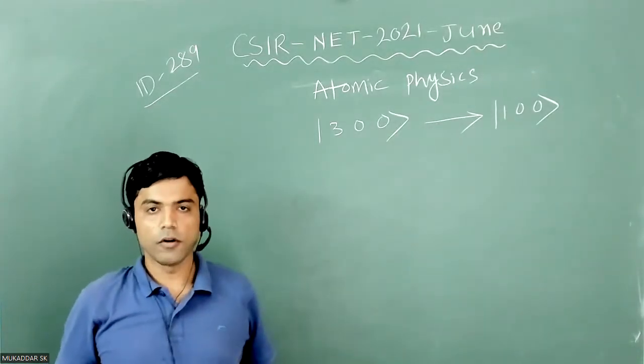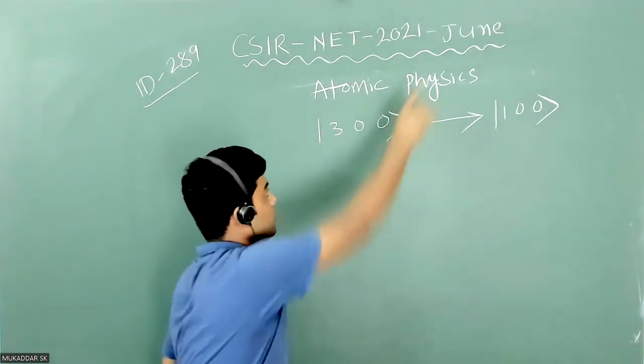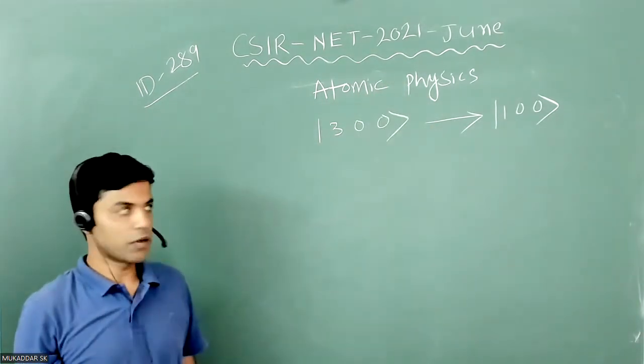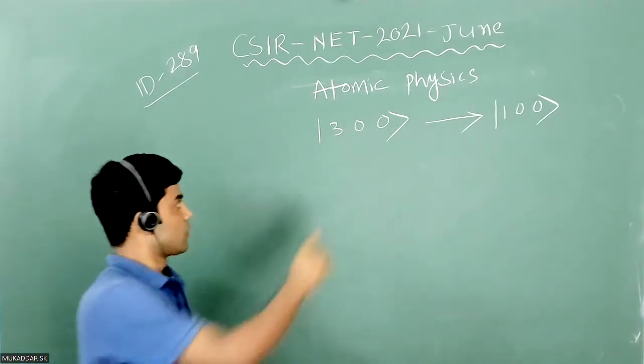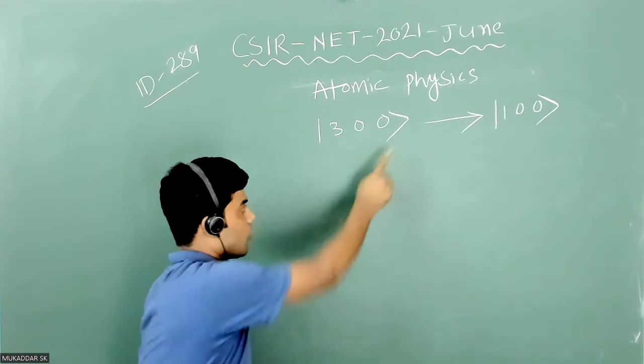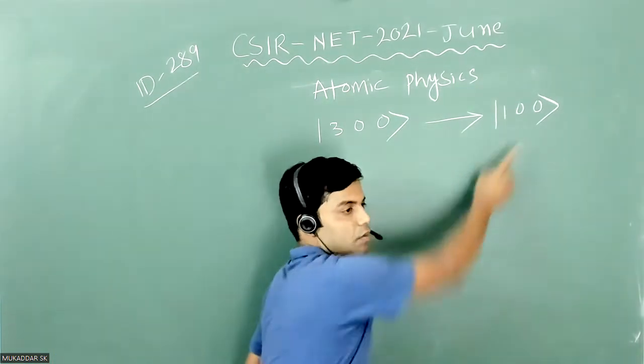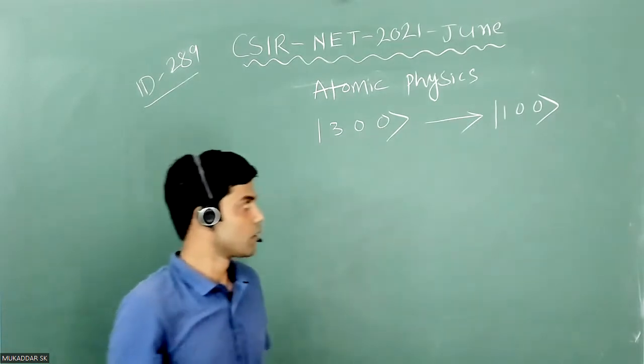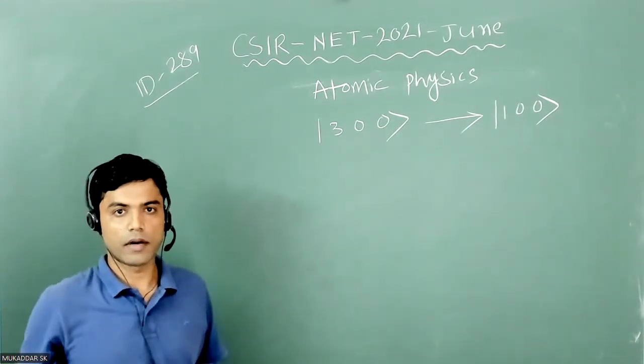Hello students, today we will solve one problem from CSIR-NET 2021 June, and that question is from Atomic Physics. In that question, what they have given is that 3,0,0 state of hydrogen atom decays to 1,0,0 state by a diagonal transition, then the possible decay mode will be what we have to find.